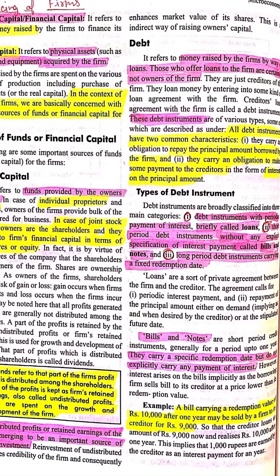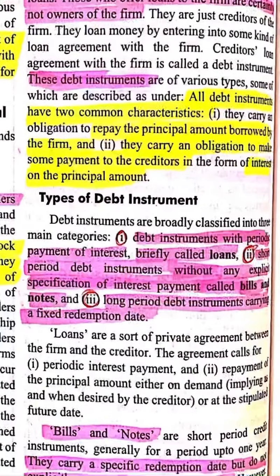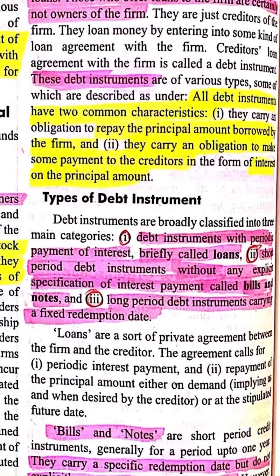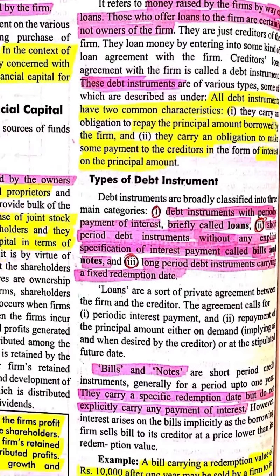Next humara source hai debt. Jo vyakti debt provide karta hai, wo owner na hokar creditor kehlayega. Aur kisi bhi prakar ka debt instrument kyon na ho, do characteristics common hain — first, they carry an obligation to repay the principal amount borrowed by the firm. Doosra, they carry an obligation to make some payment to the creditors in the form of interest on the principal amount. Principal amount par interest bhi pay karna hoga creditors ko.